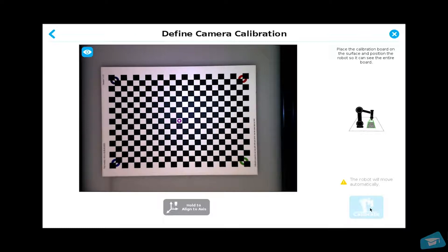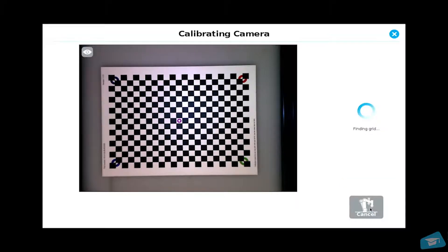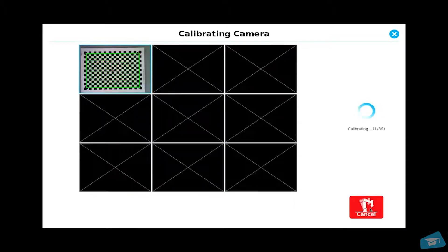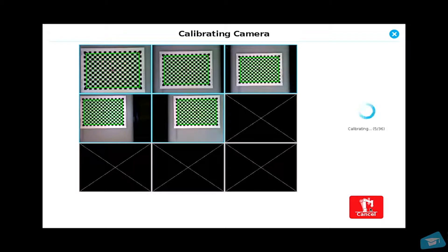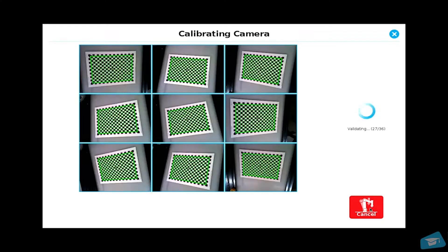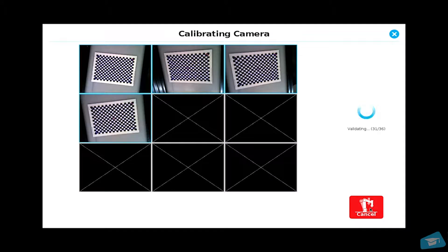Tap the calibrate button. The calibration process will start. The robot will move around the calibration board and will take 36 pictures. The result of the calibration will be shown in the window at the end of this sequence.